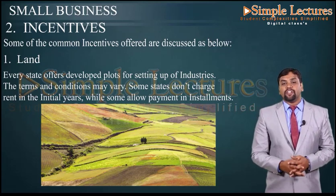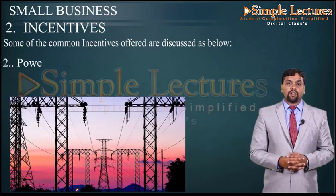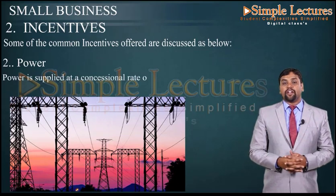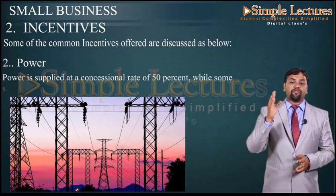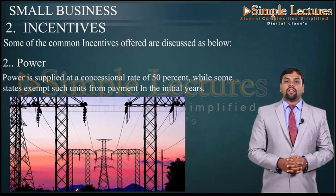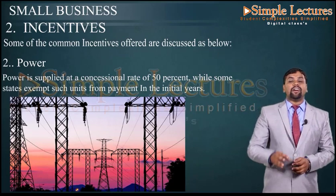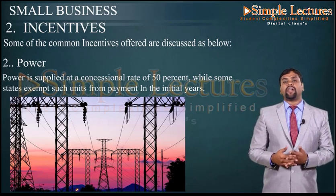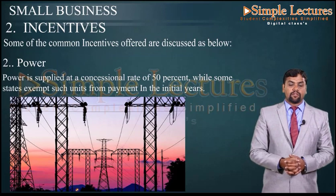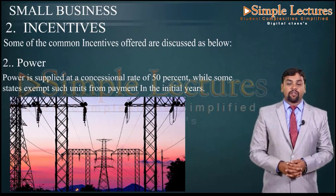The next incentive scheme is about power, that is electricity. Power is supplied at a concessional rate of almost up to 50% concession. In some other states, small units are exempted from electricity bill payment for the first 3 to 5 years, depending on the state — giving a very large discount on power bills.